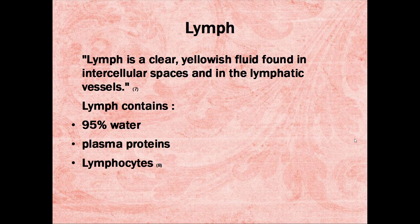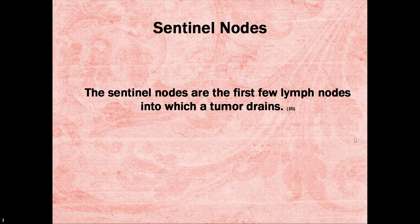Lymph is a clear, yellowish fluid found in intercellular spaces and in the lymphatic vessels. Lymph contains mostly water, about 95%, plasma proteins, and lymphocytes. Sentinel nodes are the first few lymph nodes into which a tumor drains.